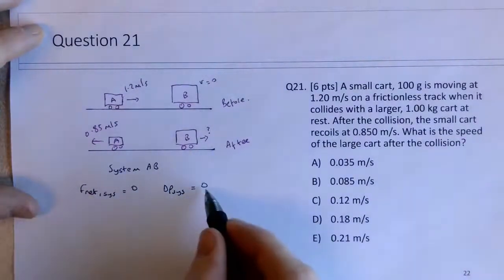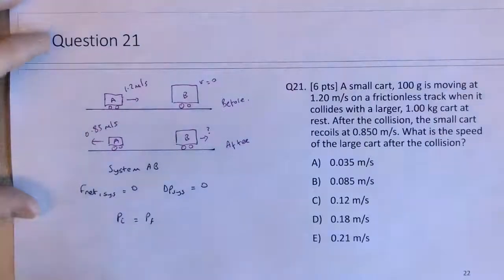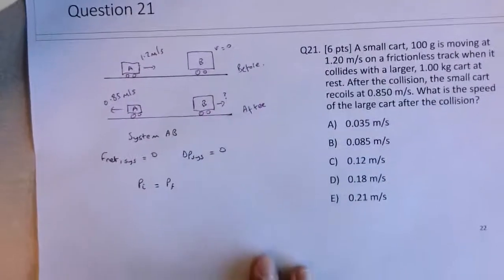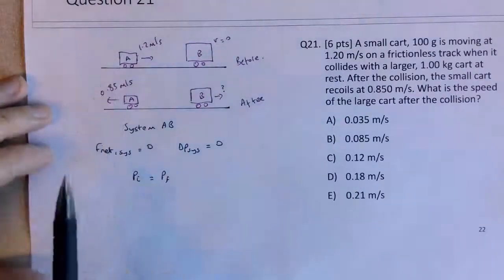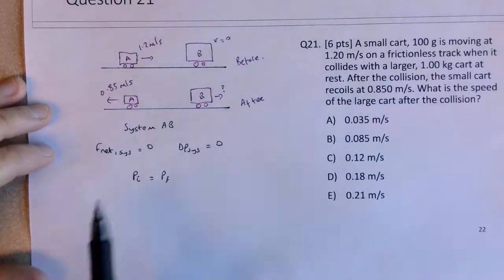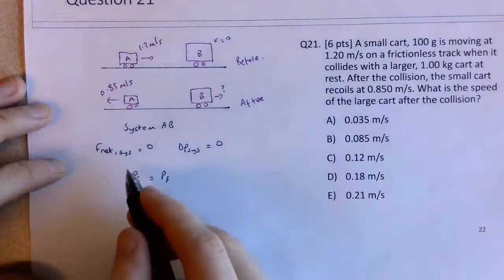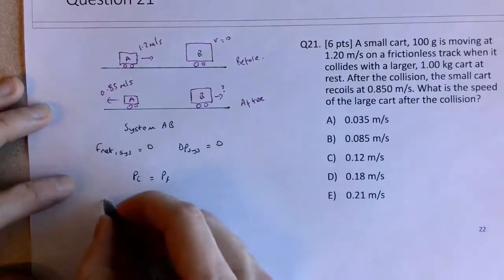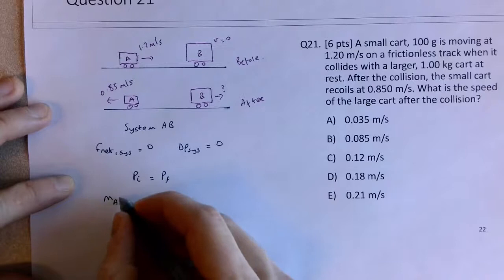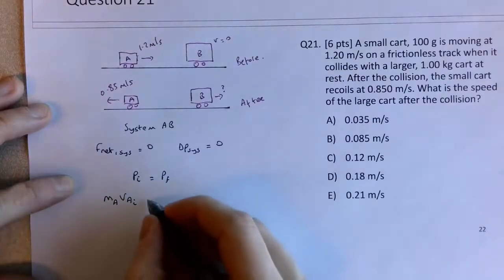So I will consider that the change in momentum is 0. Then the initial momentum of the system equals the final momentum of the system. And then the initial momentum of the system is only the momentum of A, since there is no initial momentum of B. So you could include an M_B V_B initial term, but it would be 0, so I'm going to skip that step. The initial momentum of the system is M_A V_A initial.